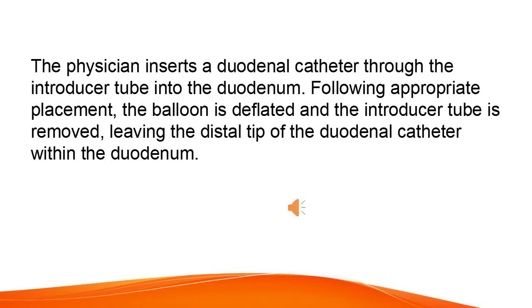The physician inserts a duodenal catheter through the introducer tube into the duodenum. Following appropriate placement, the balloon is deflated and the introducer tube is removed, leaving the distal tip of the duodenal catheter within the duodenum.